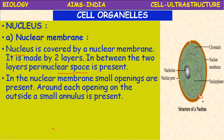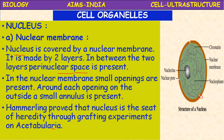The nuclear membrane possesses small openings called nuclear pores. Around each opening on the outside, a small annulus is present. The scientist Hammerling proved that the nucleus is the seat of heredity through grafting experiments on Acetabularia.